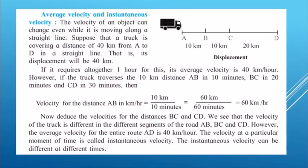Next is average velocity and instantaneous velocity. The velocity at a particular moment of time is called instantaneous velocity — whatever the velocity is at that moment is the instantaneous velocity. This can be different at different times.